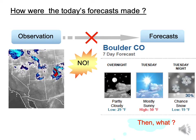How was today's weather forecast made? Most people assume that observation data are used to directly provide forecasts. However, information from observation itself is only useful for hours in advance, up to 6 hours.